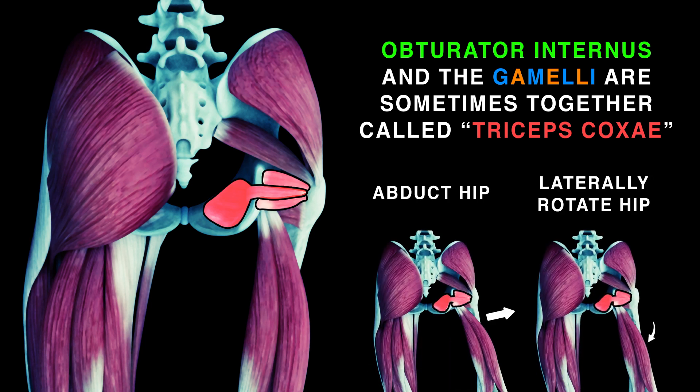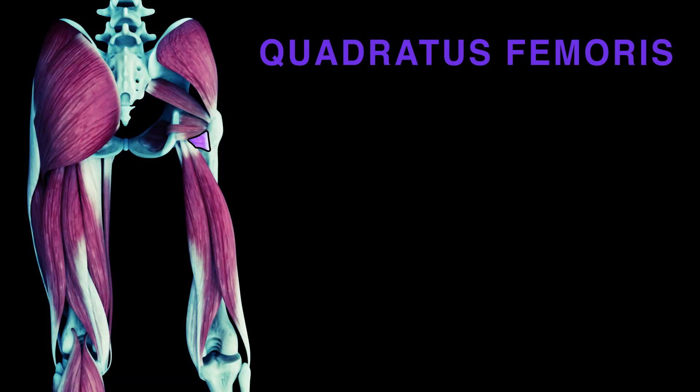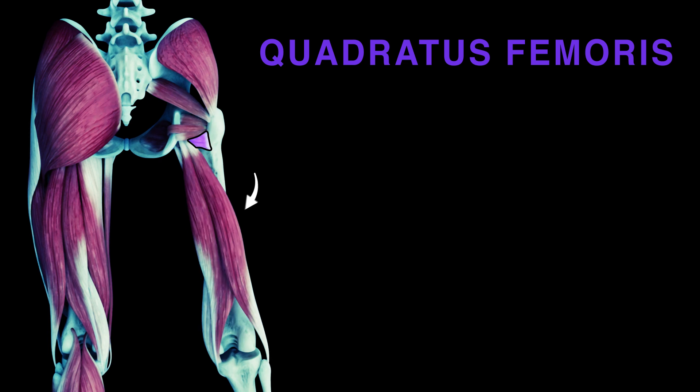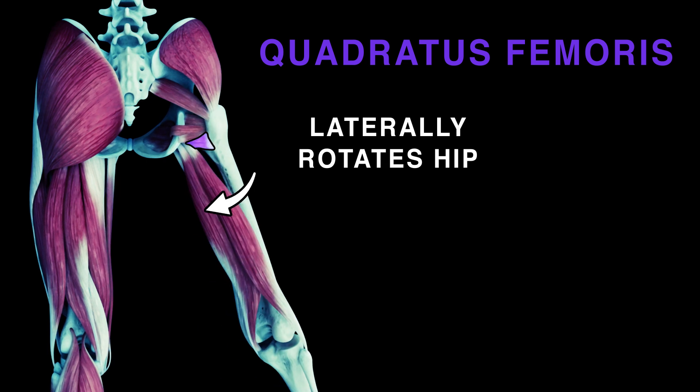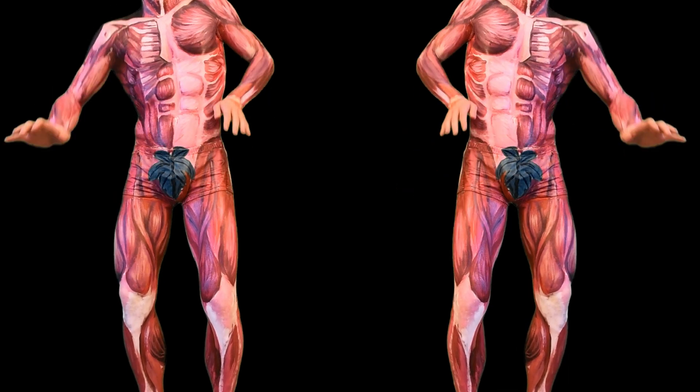They perform abduction and lateral rotation as one. Now we come to quadratus femoris, which is flat and square. This deep gluteal muscle does lateral rotation — be aware.